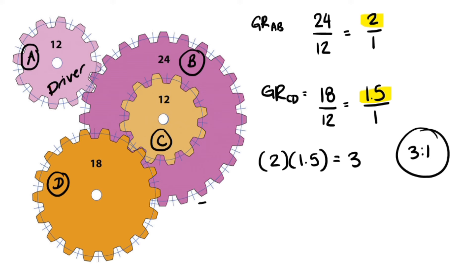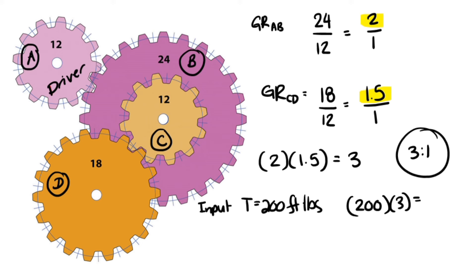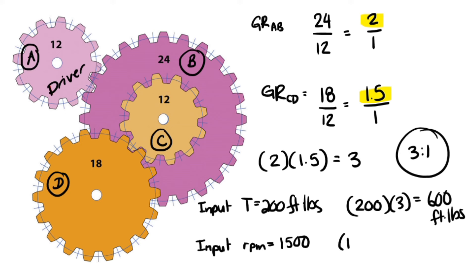With an input torque of 200 foot-pounds and an overall gear ratio of 3 to 1, the output torque is 200 times 3 equals 600 foot-pounds. The input speed is 1,500 RPM. For output speed, 1,500 divided by 3 gives 500 RPM.